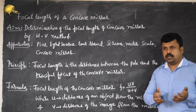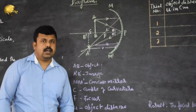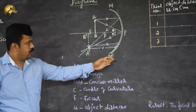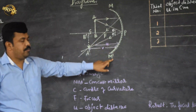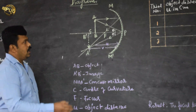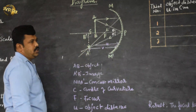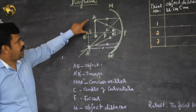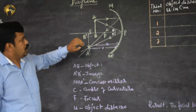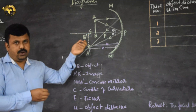Let us understand this experiment with the diagram. Here we have the concave mirror M-M dash. The pole — the midpoint of the concave mirror — is represented by P. We have the centre of curvature C, and half of that distance is the principal focus F. We have placed an object in front of the concave mirror between C and F. This forms an inverted and enlarged image beyond C, beyond the centre of curvature.